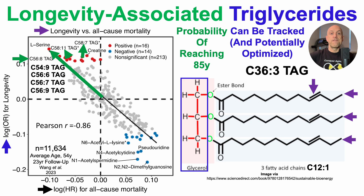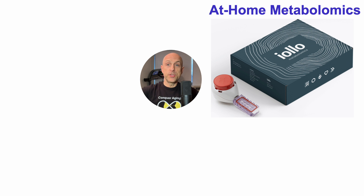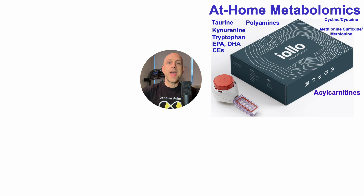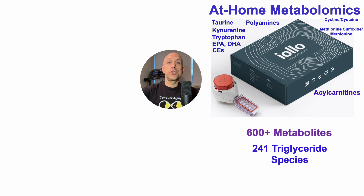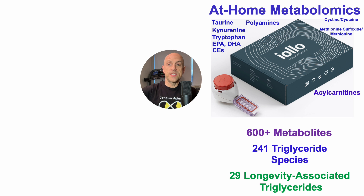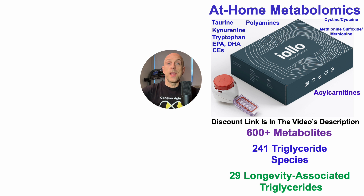Five of these triglycerides associated with an increased odds of reaching 85 years can be tracked — and potentially optimized — using IOLO's at-home metabolomics kit. Beyond these metabolites, the kit includes more than 600, including 241 triglyceride species. Amongst those, 29 are linked with increased odds of reaching 85 years. If you're interested in using the kit, there's a discount link in the video's description.